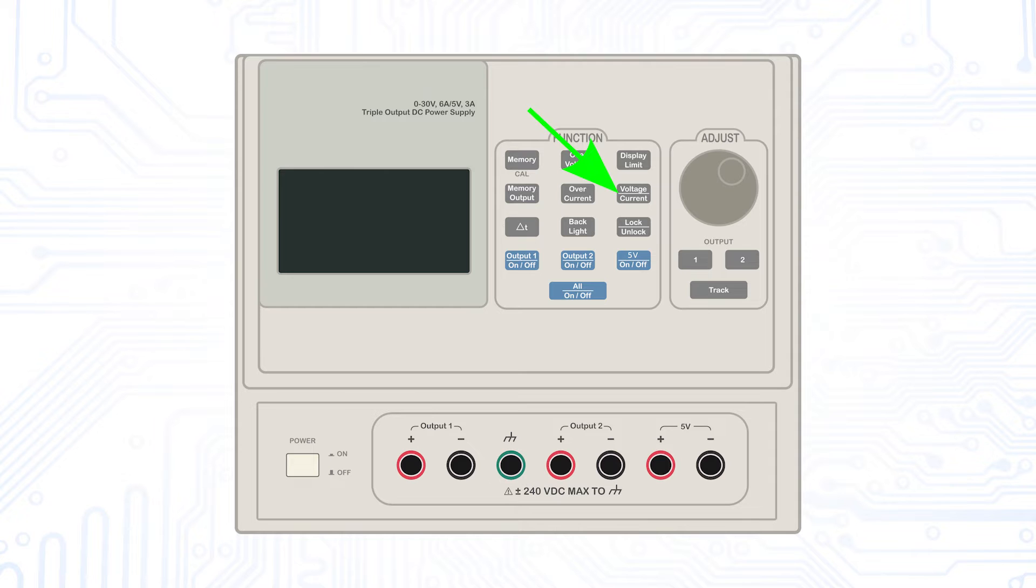The current setting also works in the same way with the voltage current button being used to switch between the two options. For many circuits, for example differential amplifier or operational amplifier circuits, a differential supply voltage is usually necessary.